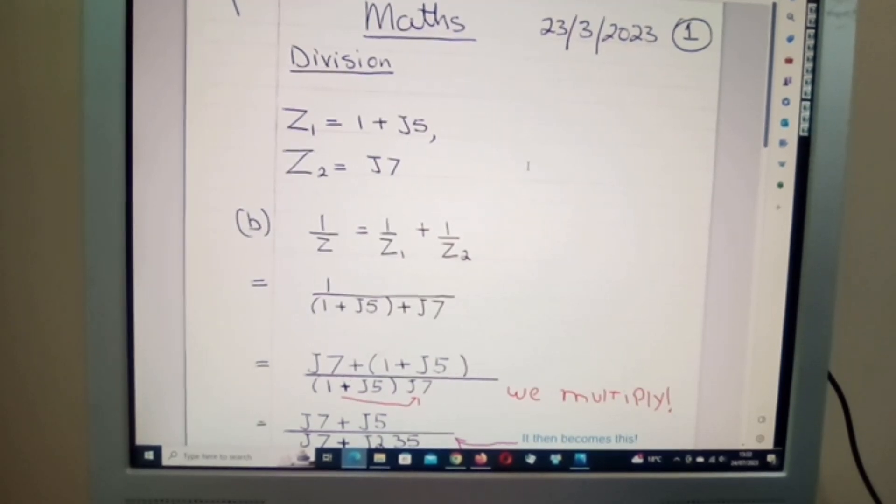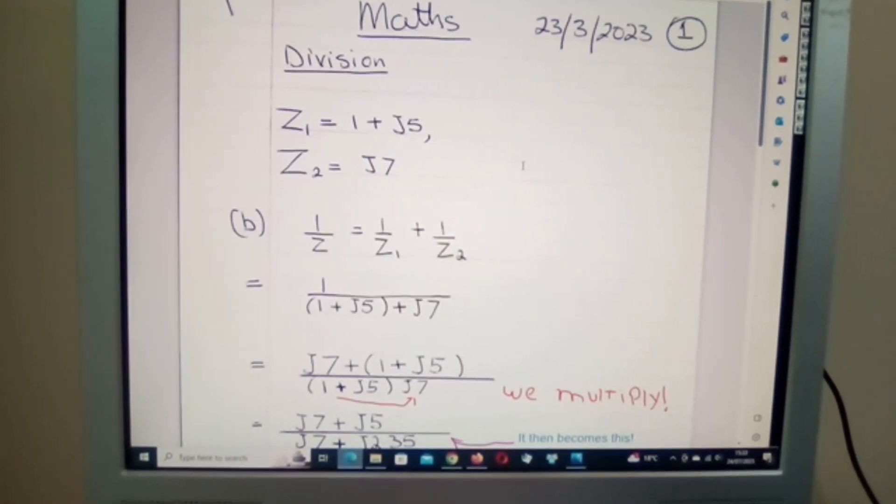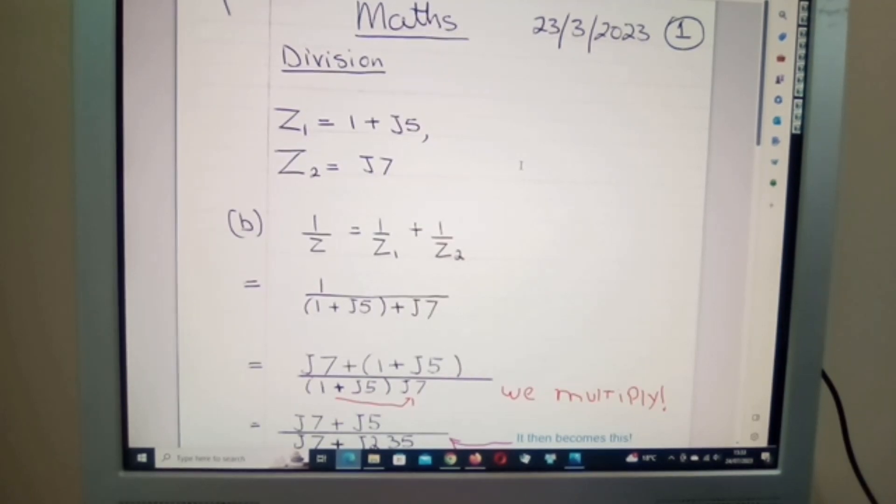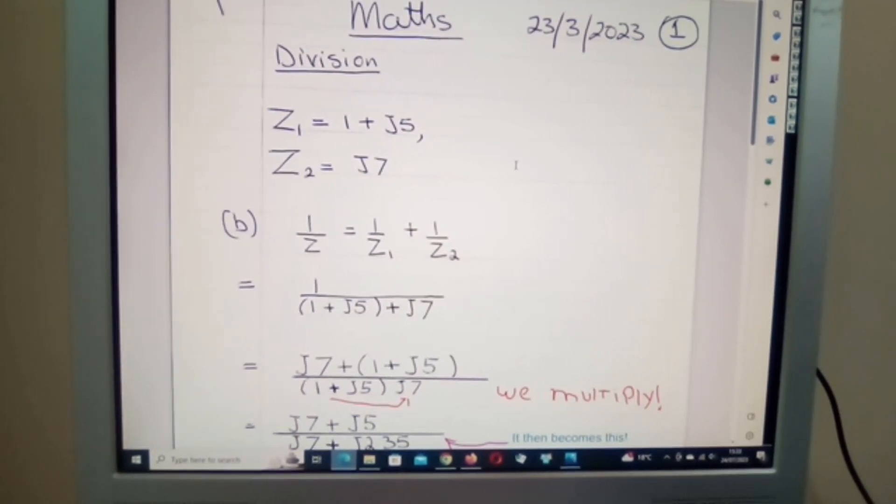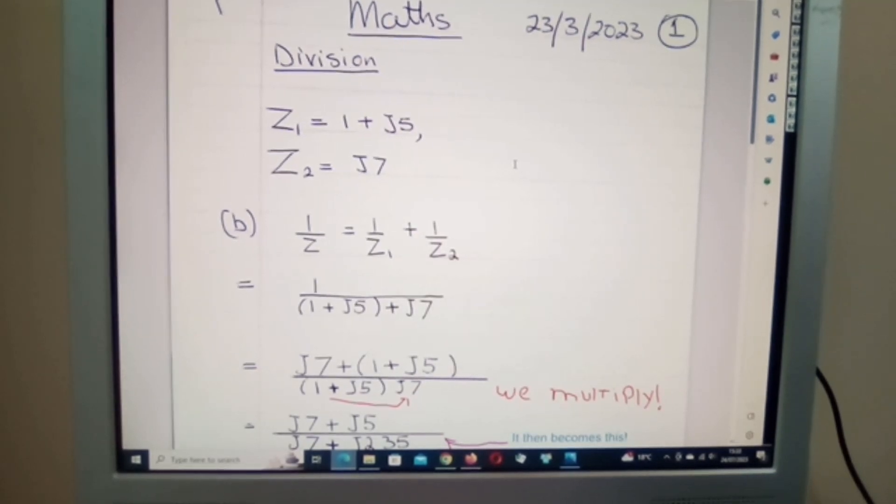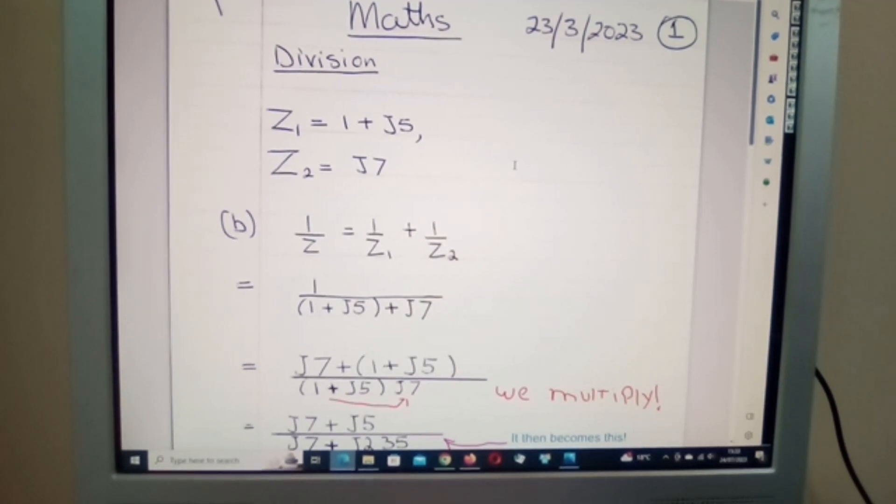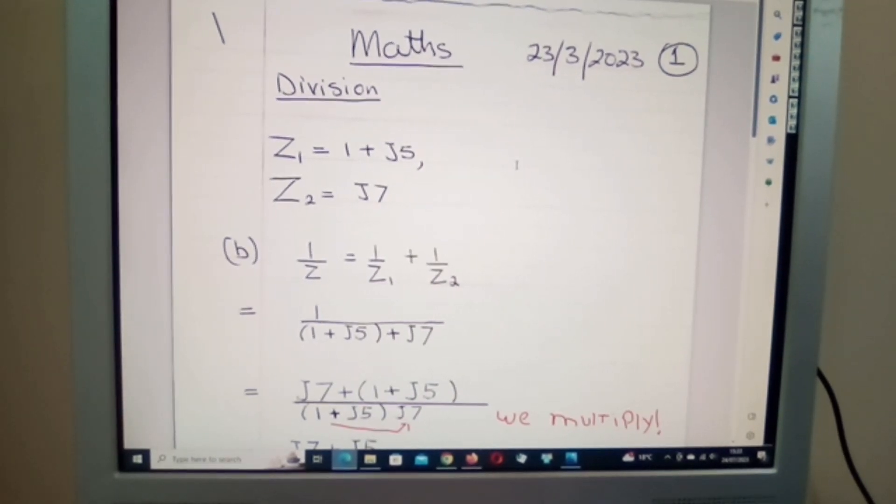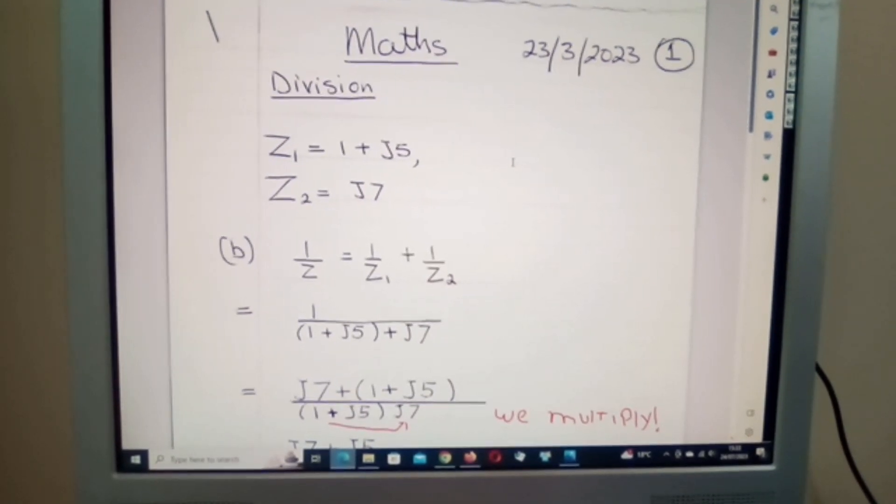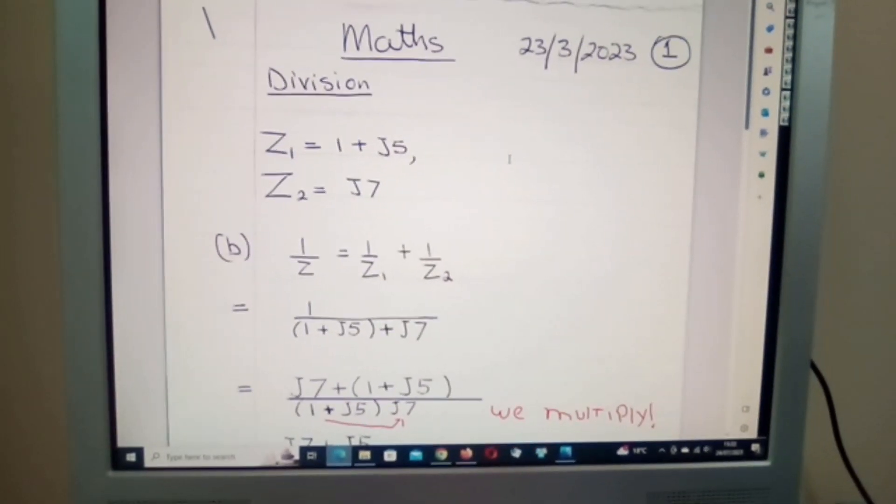And I'm just going to call it simply math division regarding Z1 and Z2. Or for me, I would just call it division of Z1 and Z2. Thank you. I hope you found this useful. Have a good day. Bye-bye.